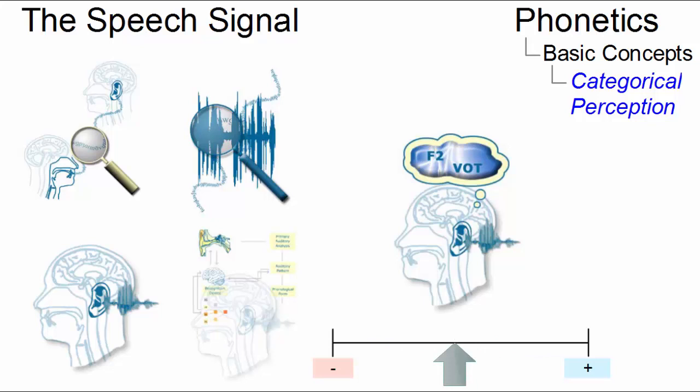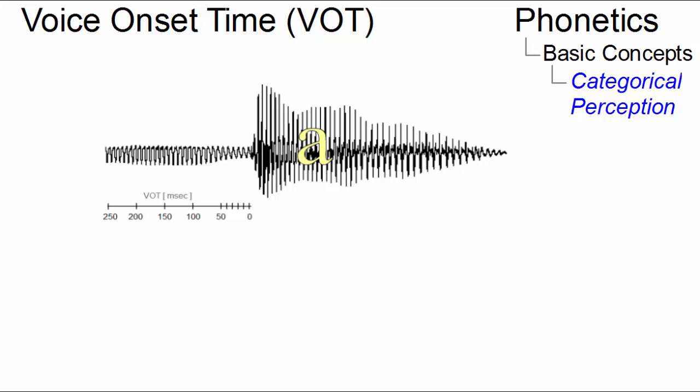Let us take voice onset time to illustrate this phenomenon. The voice onset time, or VOT, is the point when vocal fold vibration starts relative to the release of a closure.